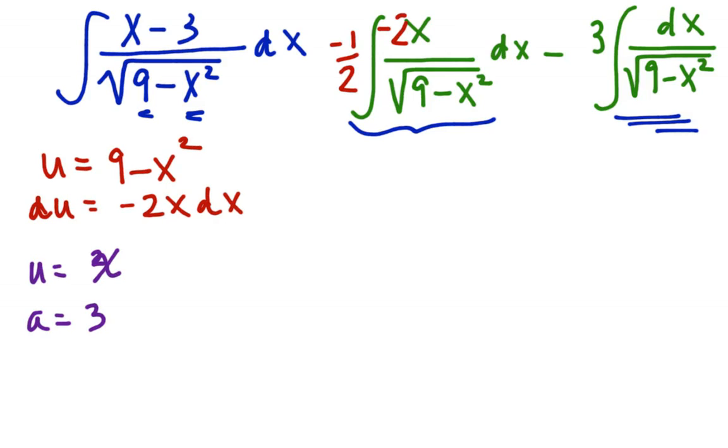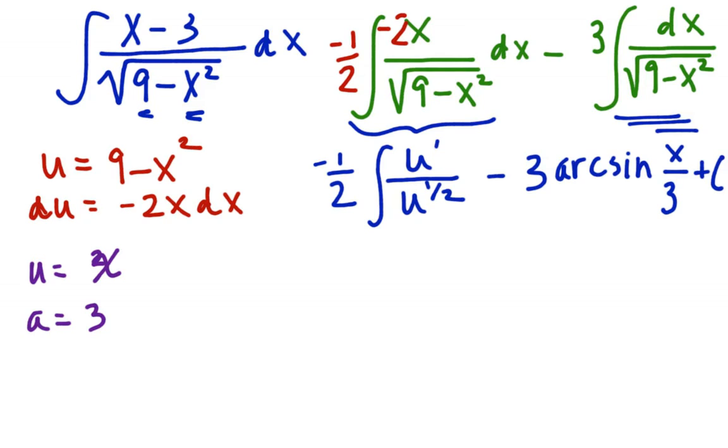Right? And then that fits the pattern perfectly. So let's integrate. I have negative 1 half and I have u prime over u to the 1 half minus 3. And I have that arc sine of u over a. u, we said, is x. a is 3 plus c. I got a little more work to do.